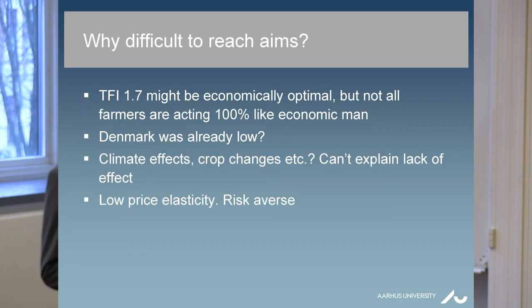So why was it difficult to reach these aims? TFI of 1.7 might be economically optimal, but not all farmers are acting 100% like economic men. Of course, they are acting to a certain degree. They are responding to price signals, but it's just not 100% economic men. Of course, there's some low price elasticity and as you also said, there is some risk averseness among the farmers.